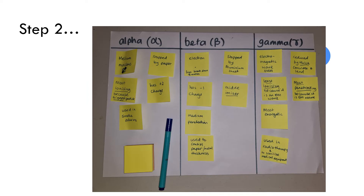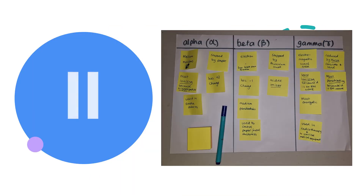Step 2. Write a feature of each type of radioactive decay on an individual sticky note using your source of information. Press the pause button now to complete this.